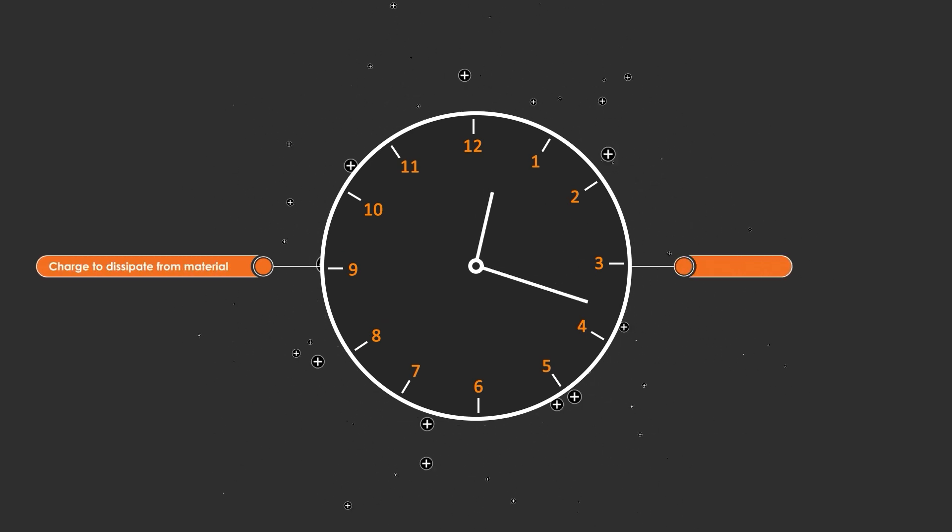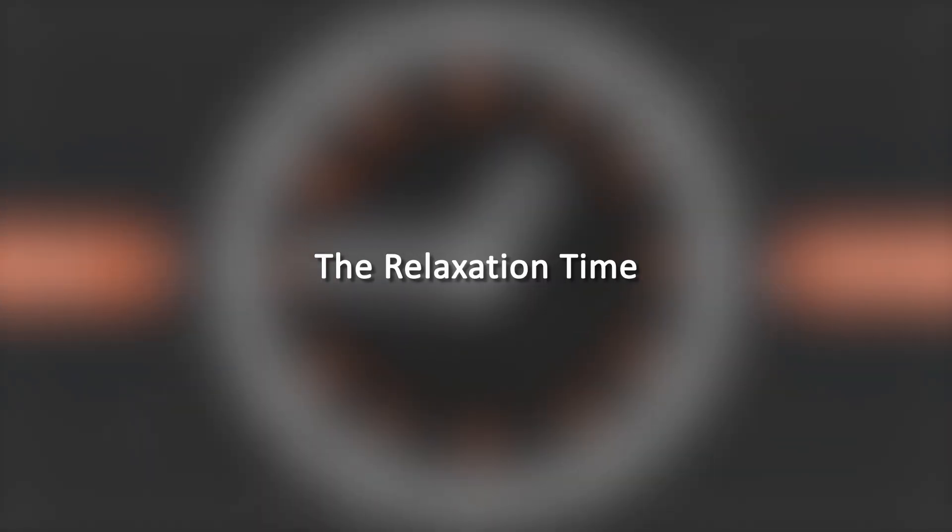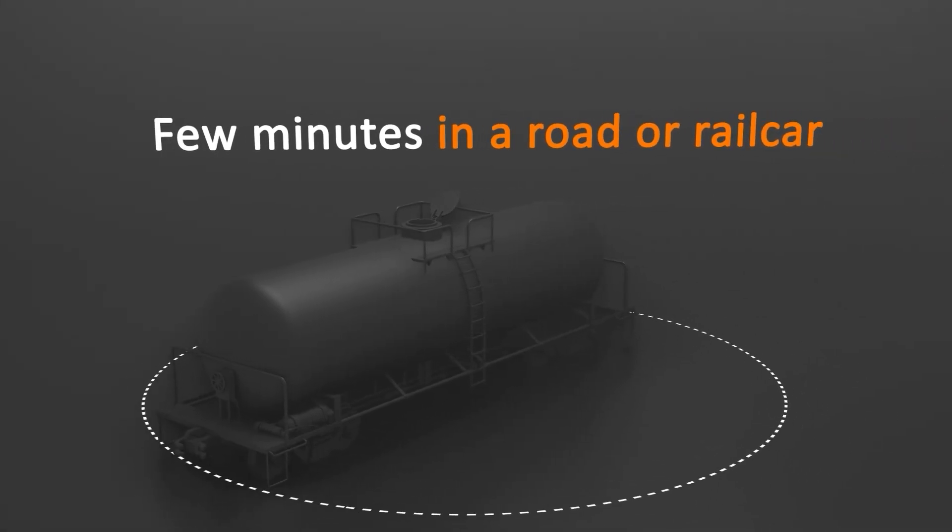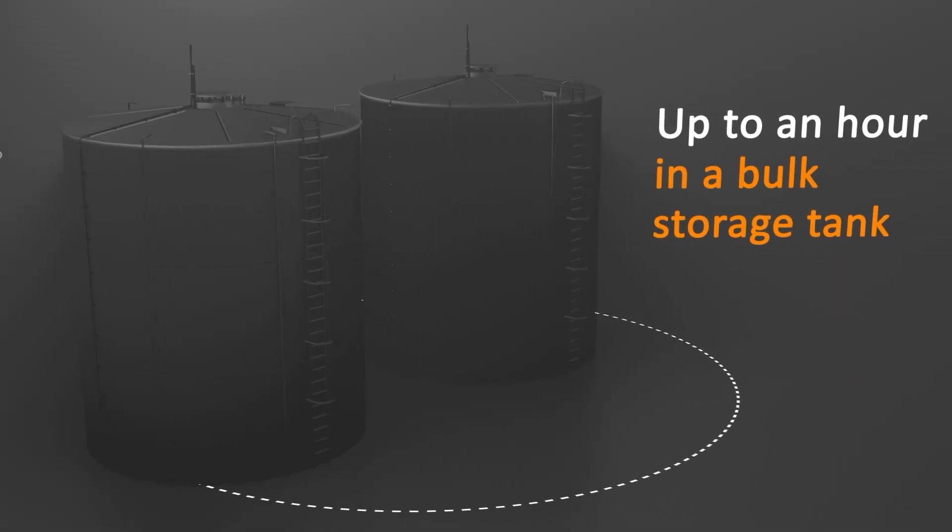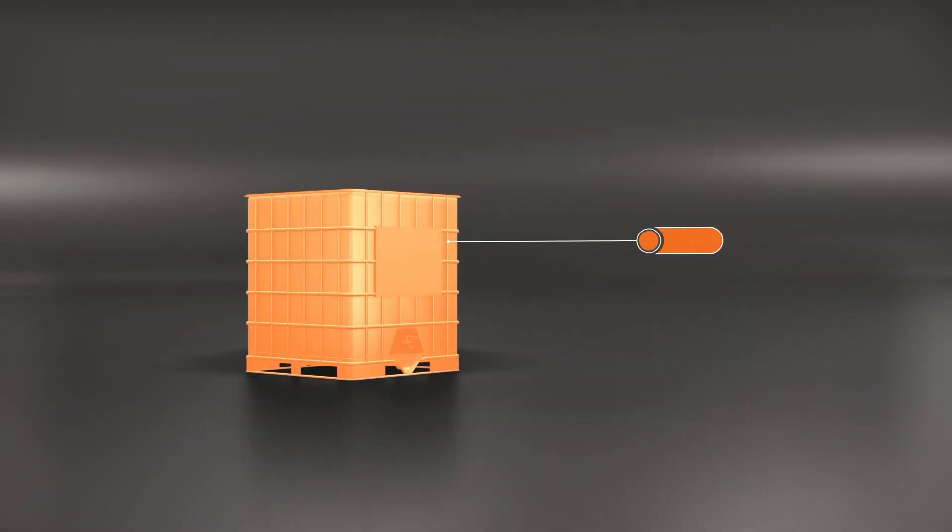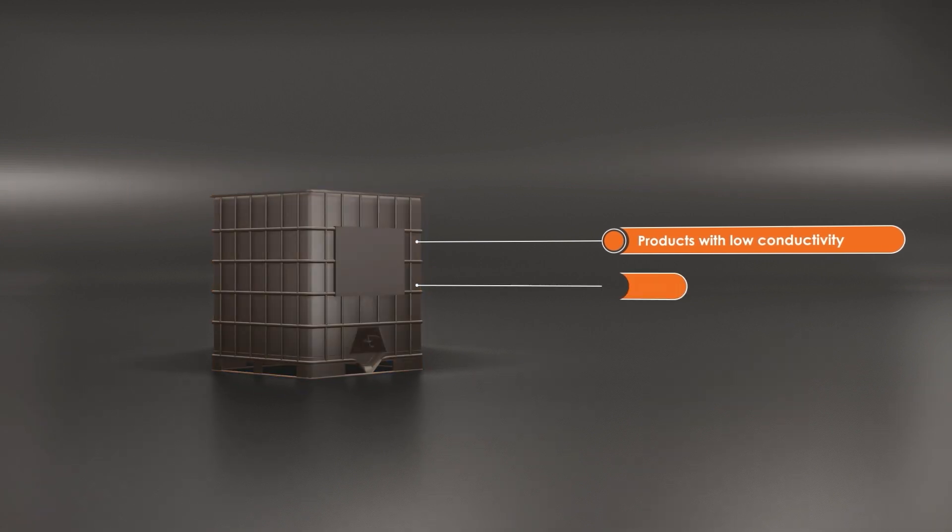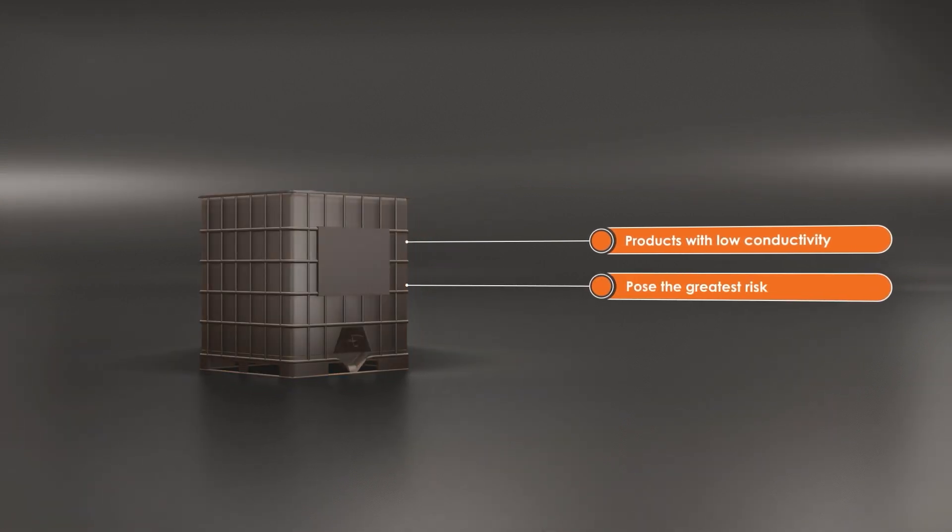The time taken for a charge to dissipate from a material, and hence the spark hazard to be eliminated, is called the relaxation time. This time can range from a few minutes in a road or rail car and up to an hour in a bulk storage tank. Products with low conductivity and hence the ability to retain an electrical charge pose the greatest risk.